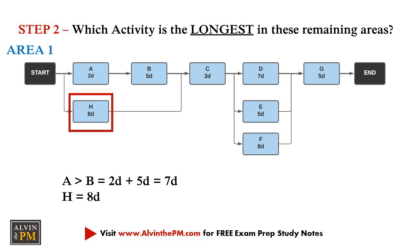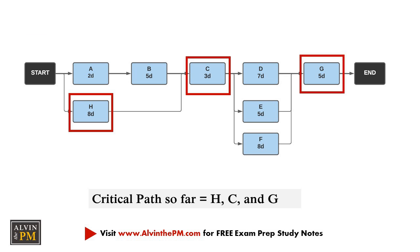Since H has a longer duration than A and B combined, H must be the activity on the critical path. By now, we have identified that H, C, and G are on the critical path. We now just have to figure out the last remaining area, area 2.